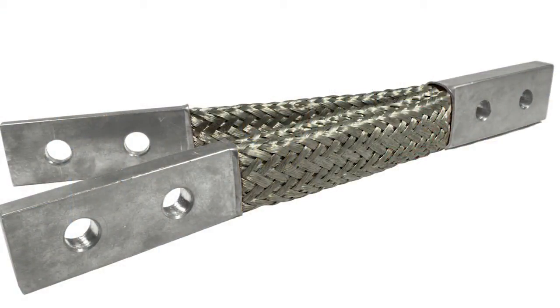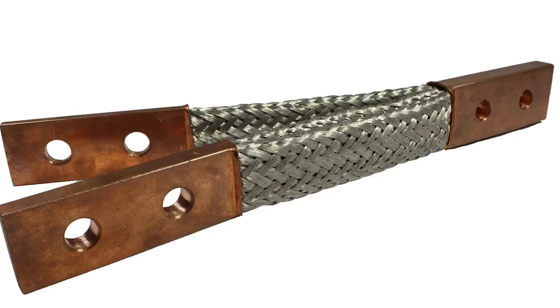To make your braid more robust, Burndy offers a number of possible solutions. Several plating options are available to protect your braid in various environments, including silver, nickel, or tin plating. These are applied to the ferrule contact surfaces to prevent corrosive effects.